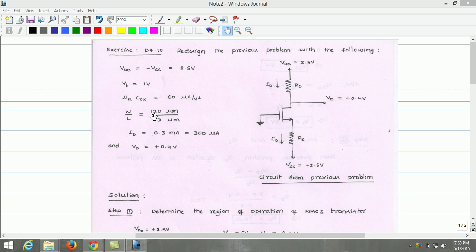W by L is 120μm by 3μm. The drain current flowing through the transistor is 0.3mA which is equivalent to 300μA. The drain voltage of the transistor is 0.4V.